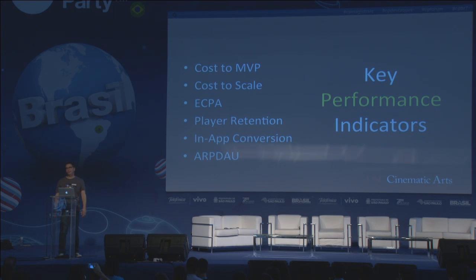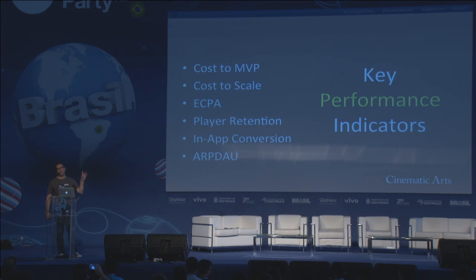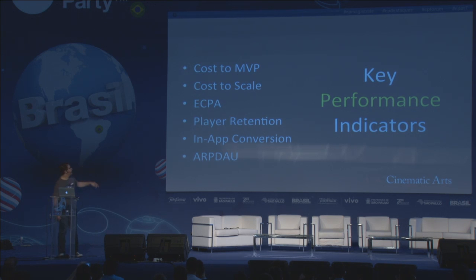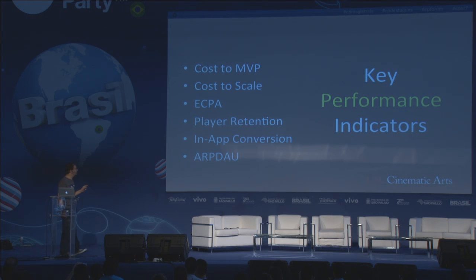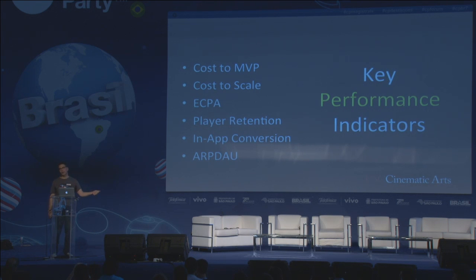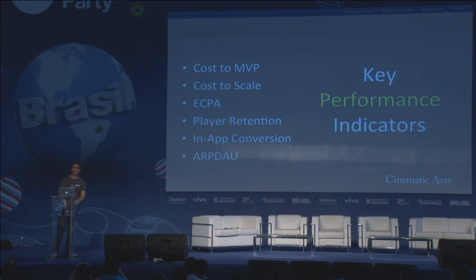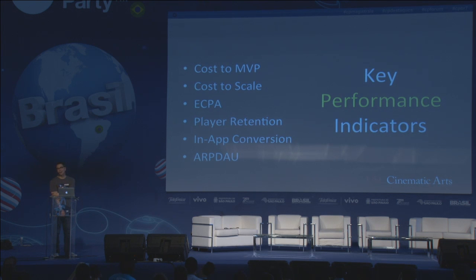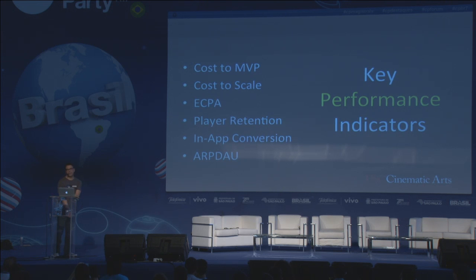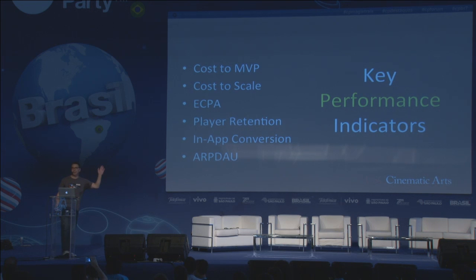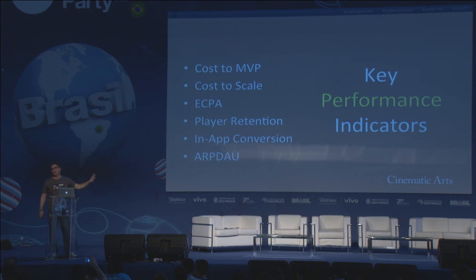We spend weeks learning how to integrate design balance to key performance indicators. First: Cost MVP — how much will it cost to build a minimally acceptable product you can put on the market and test? How much to go from build one to build thirty? Second: ECPA — expected cost of player acquisition. You know you'll have to buy installs — how much are you willing to spend, for how long, and how long will they stay? That's retention. What percentage will buy? Across all free-to-play games, across all stores, it's less than 1%.